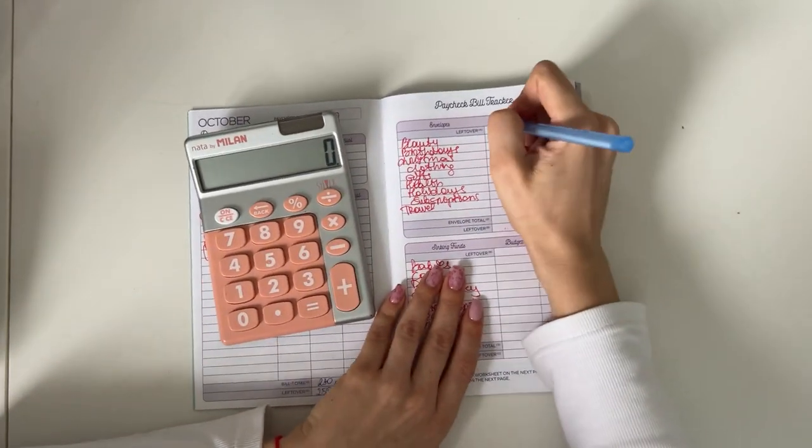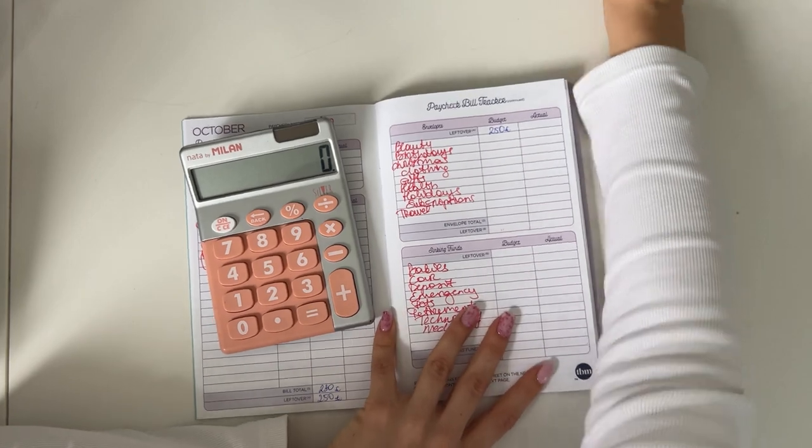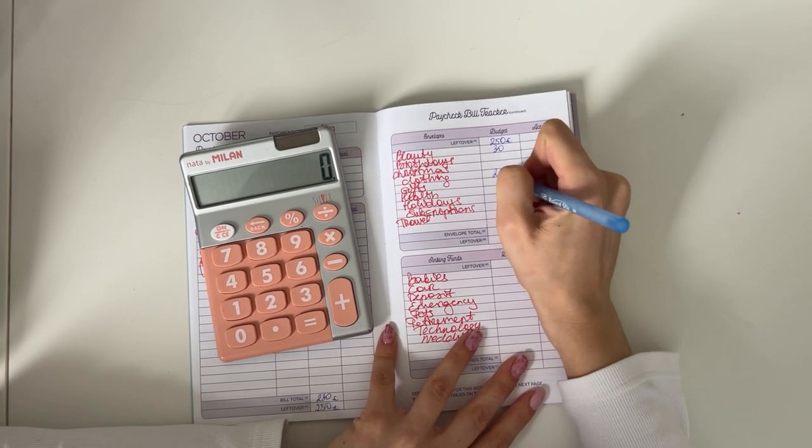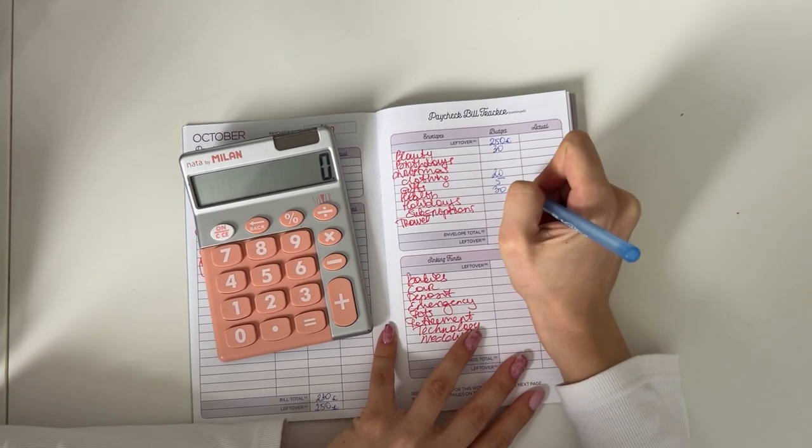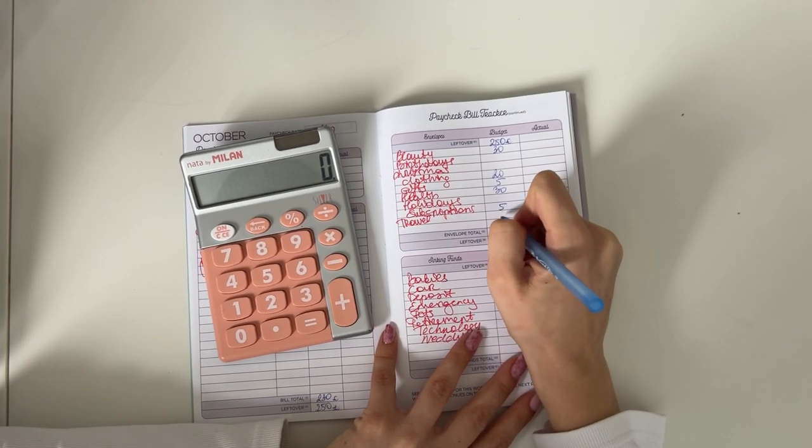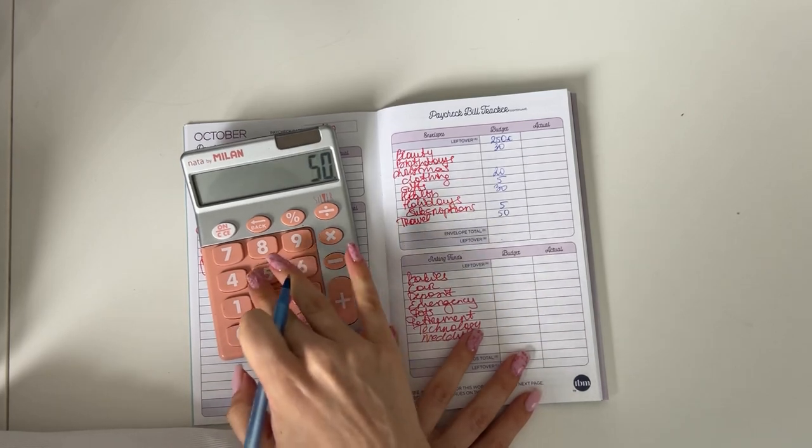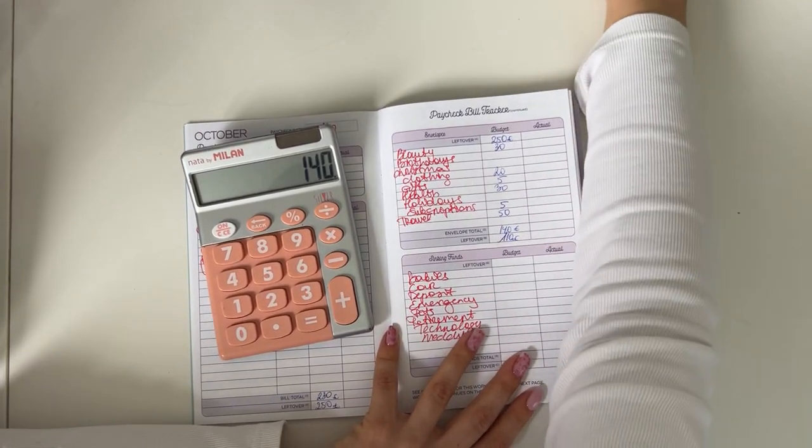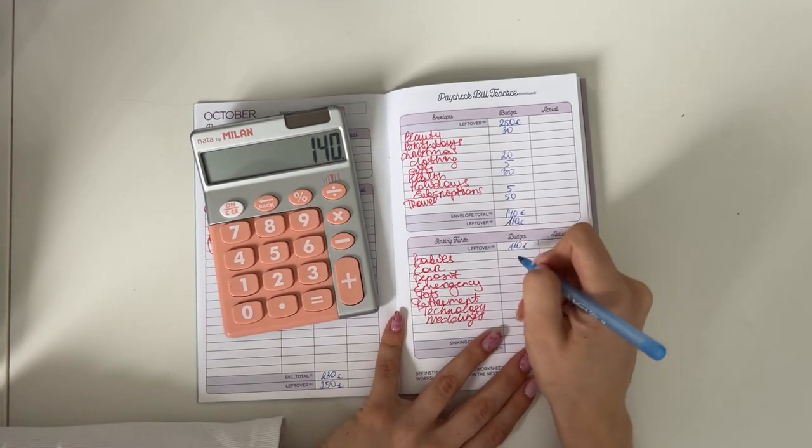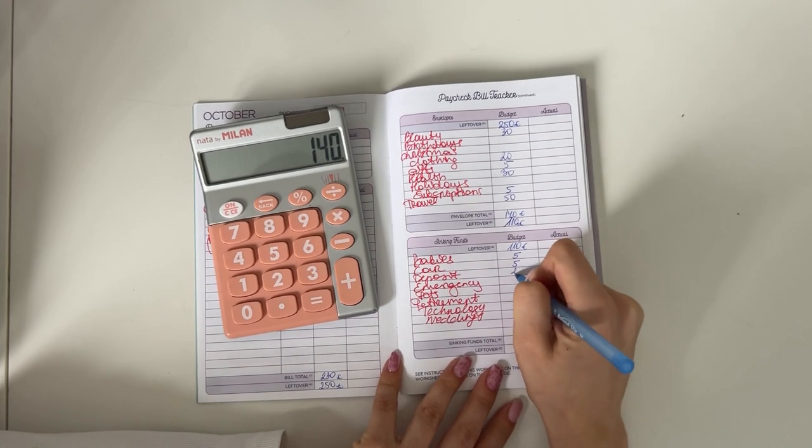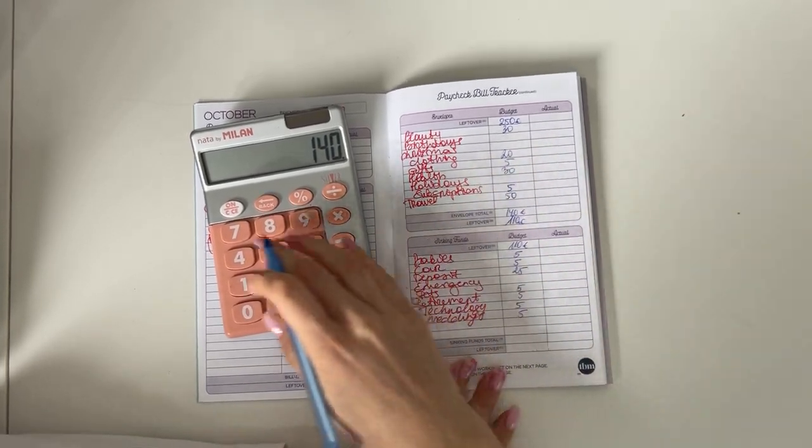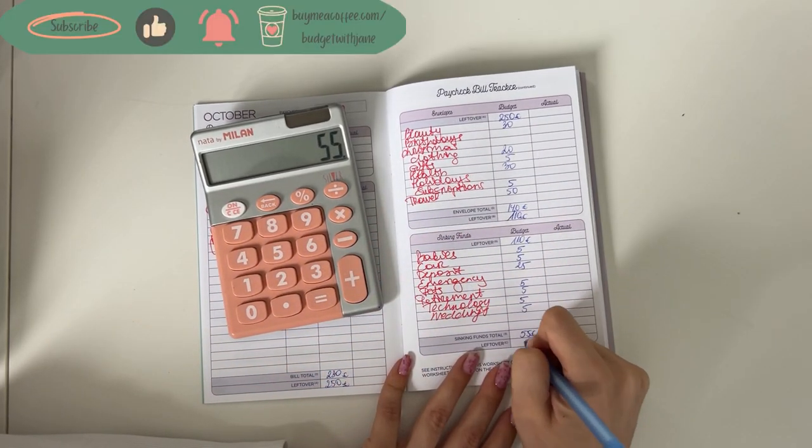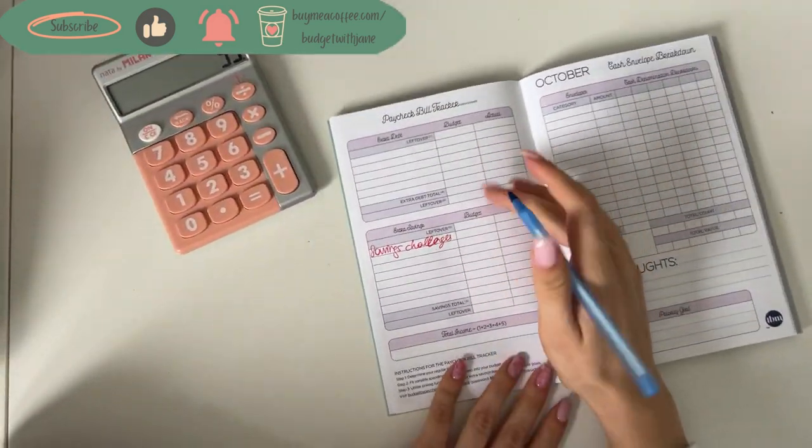We're bringing 250 to short-term sinking funds. We're going to be putting 30 in beauty, 20 in clothing, 5 in gifts, 30 in health, 5 in subscriptions, and 50 in travel. In total that is 140, so 250 minus 140 is 110. That we're bringing to long-term sinking funds. We have 5 going into babies and car, 25 in deposit, and 5 in pets, retirement, technology, and weddings each. That's in total 55 euros. 110 minus 55 is 55, so that will be going into our savings challenges.